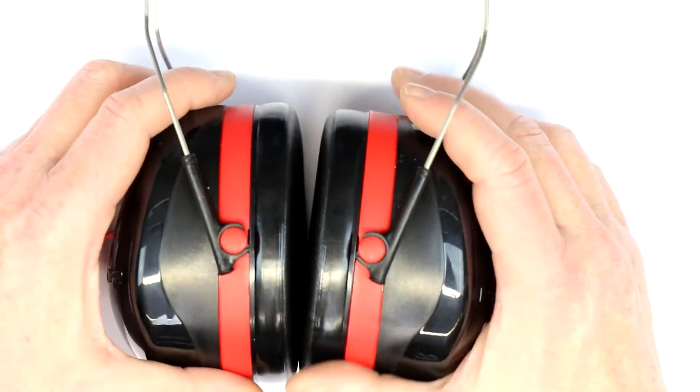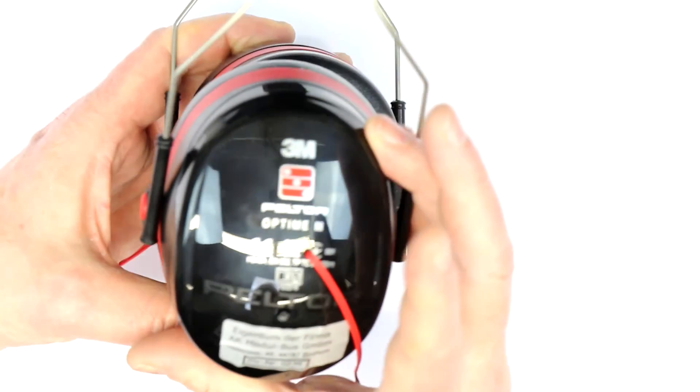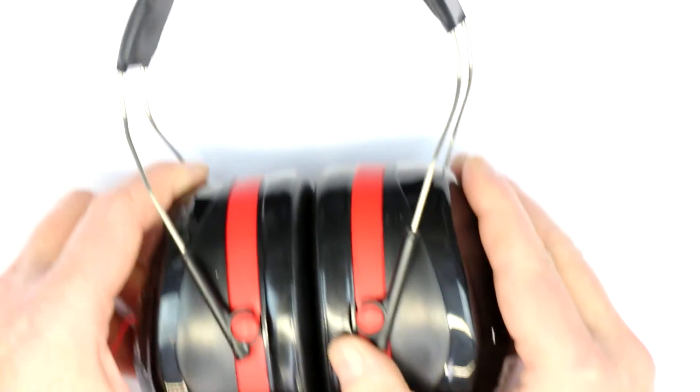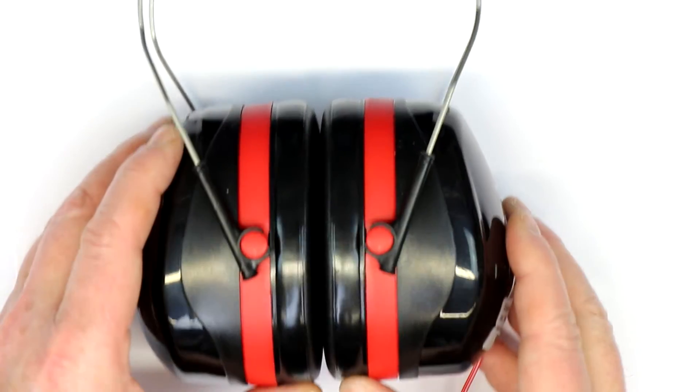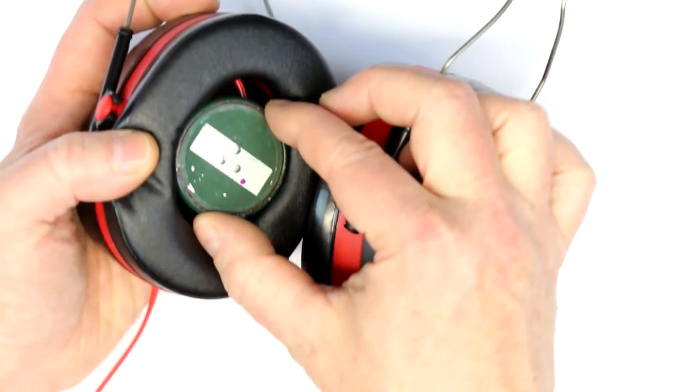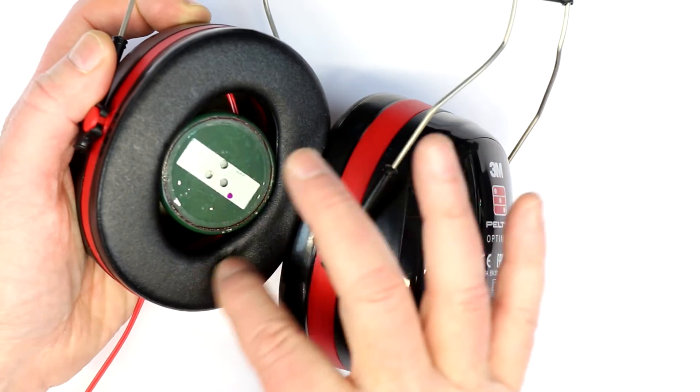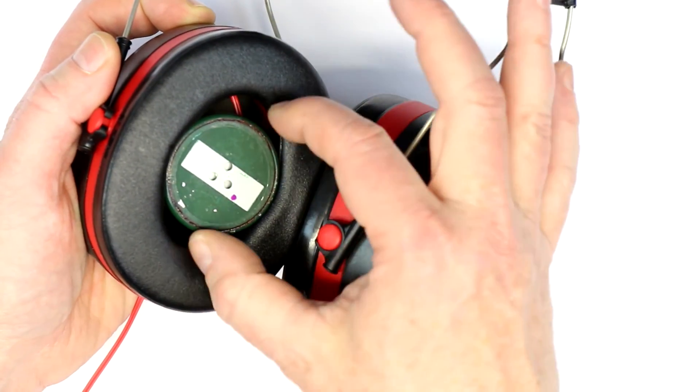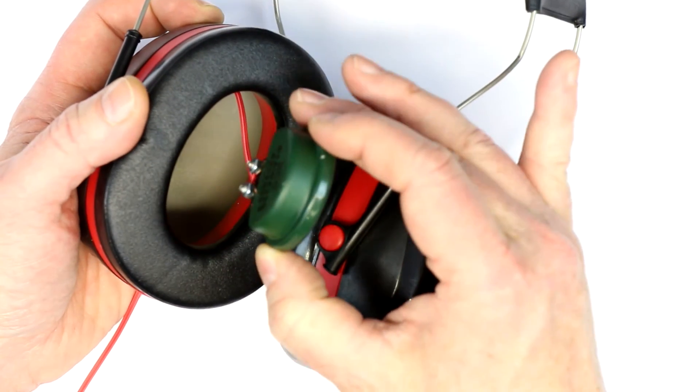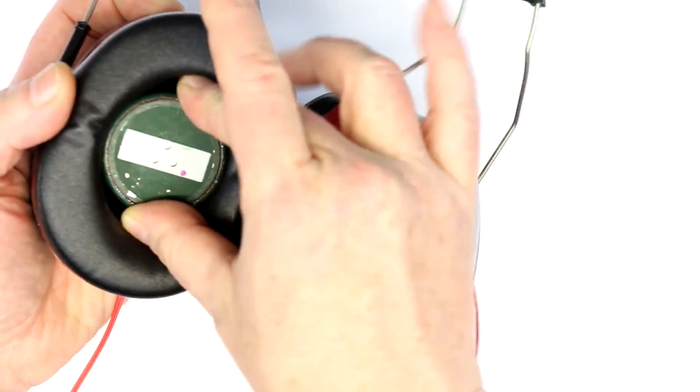This one here is a 3M Peltor Optime 3. You get them between 10 and 30 dollars on eBay. It would perhaps be nice to have ones that have a little larger diameter inside so that the rocking armature transducer fits a little deeper, so you have a better resonance room.